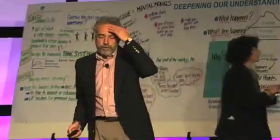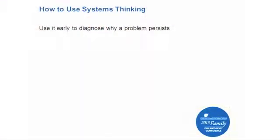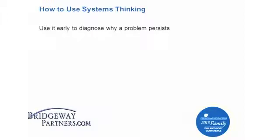How do you do this? First of all, use systems thinking early on in the process to diagnose why a problem persists. As a colleague once said, don't try to reinvent a broken wheel. Really dig down and understand why people have not been successful so far. Use systems thinking to invite others in — consciously build a more complete picture of what the real elephant looks like based on inputs from different perspectives, assuming that everyone sees part of the elephant and most likely no one sees the whole elephant.